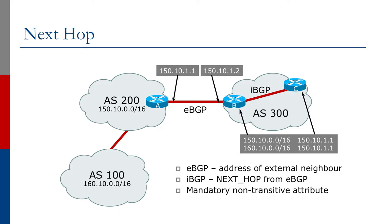We'll now look at the next BGP attribute: the next hop. As the name suggests, that's literally the next router along the path — the router where you've heard the BGP announcement from. The next hop is the IP address of the next router, so the router in the adjacent AS you've heard the prefix from. In the diagram, router B hears the prefix from router A at 150.10.1.1, and sets the next hop address to 150.10.1.1. This is for eBGP — the address of the next hop is the address of the external neighbor.